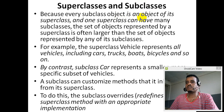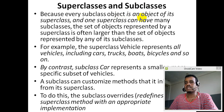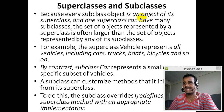Subclass should extend the superclass. For example, graduate student extends student, undergraduate student extends student. Shape is the superclass: circle extends shape, rectangle extends shape, triangle extends shape. These represent a set of objects represented by any of its classes.